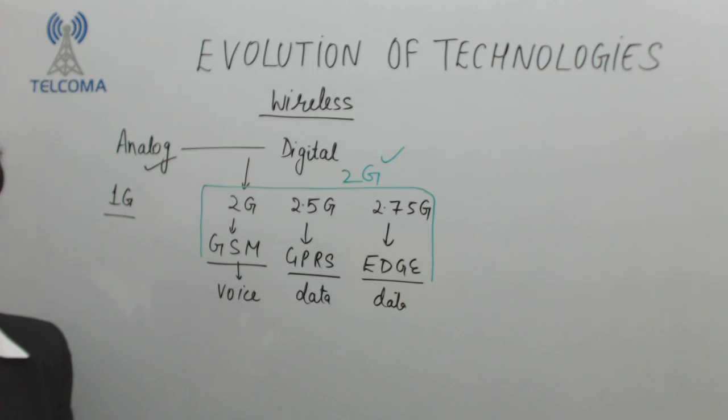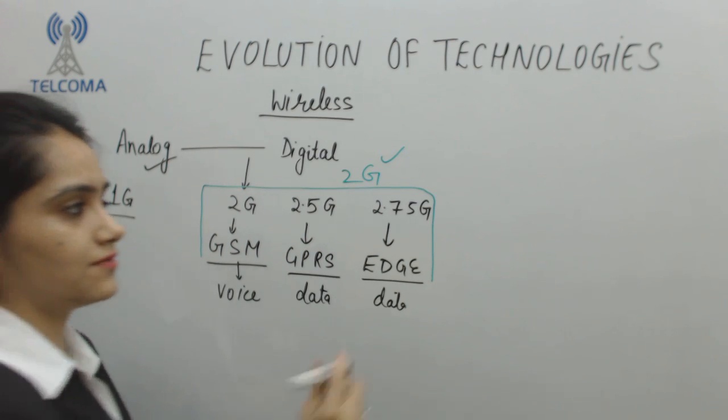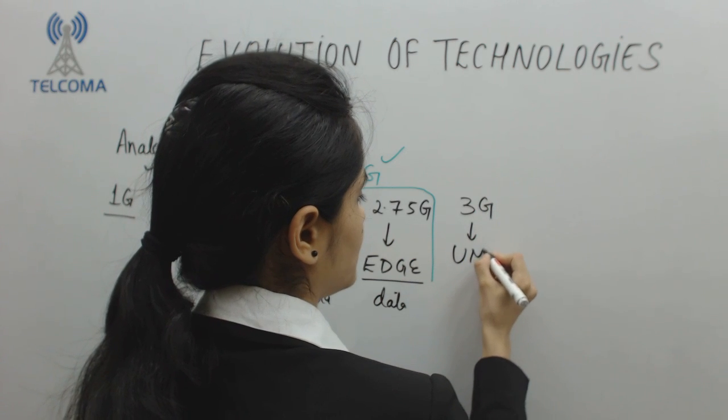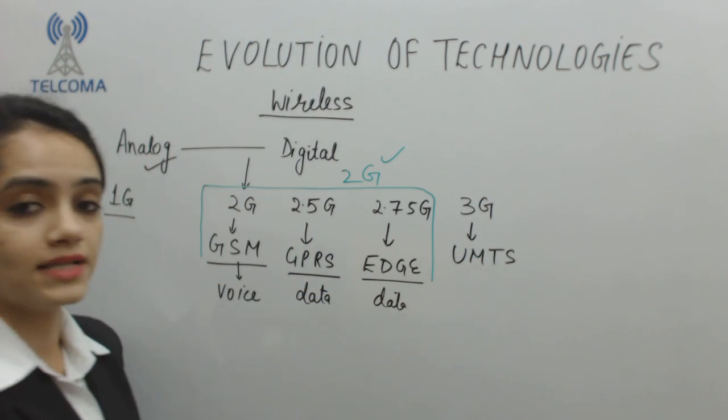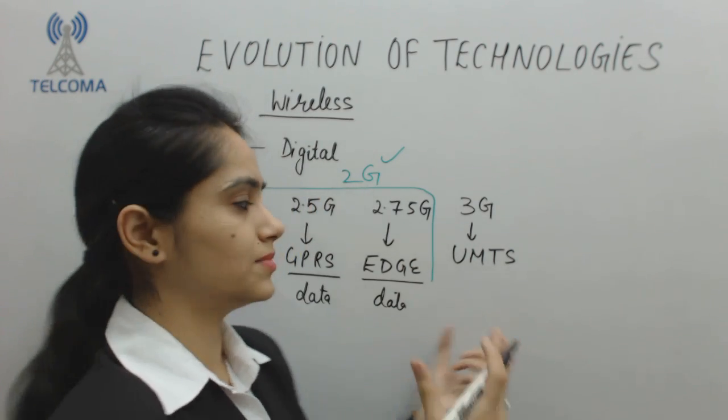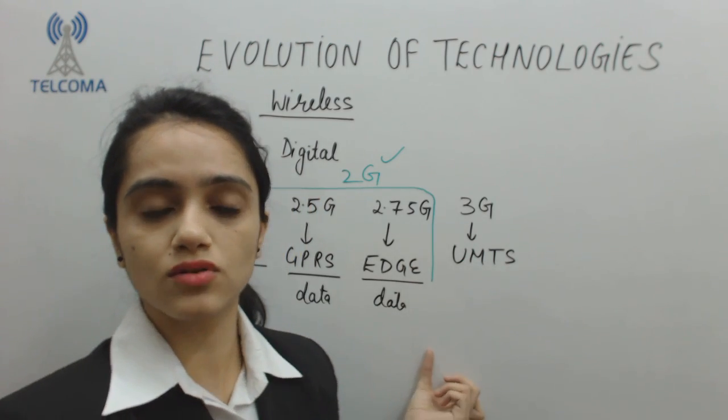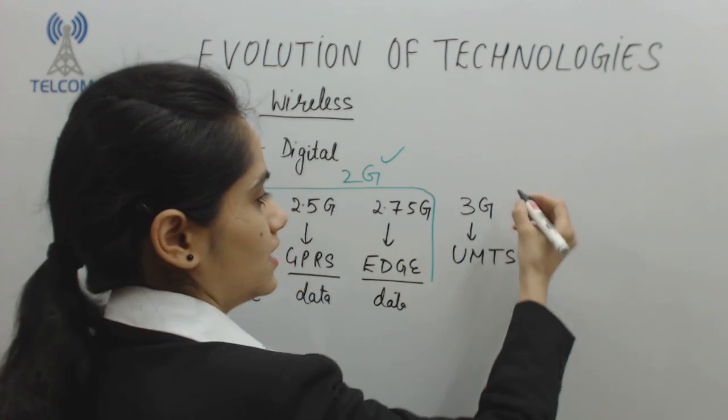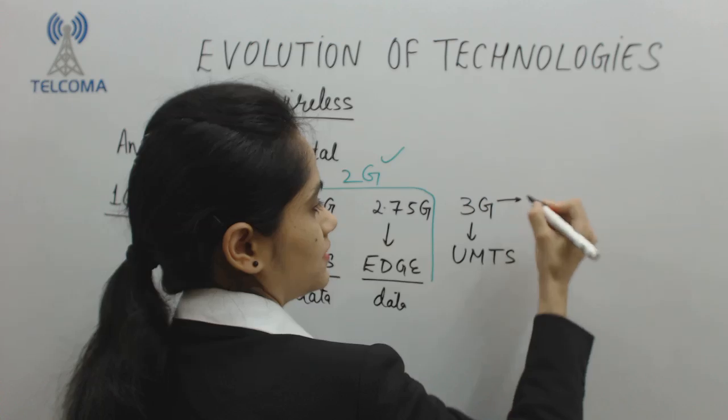After that we have a third generation which is known as UMTS, Universal Mobile Terrestrial System. Now it is giving us more data compared to the EDGE technology and also we have a feature of video calling in this.